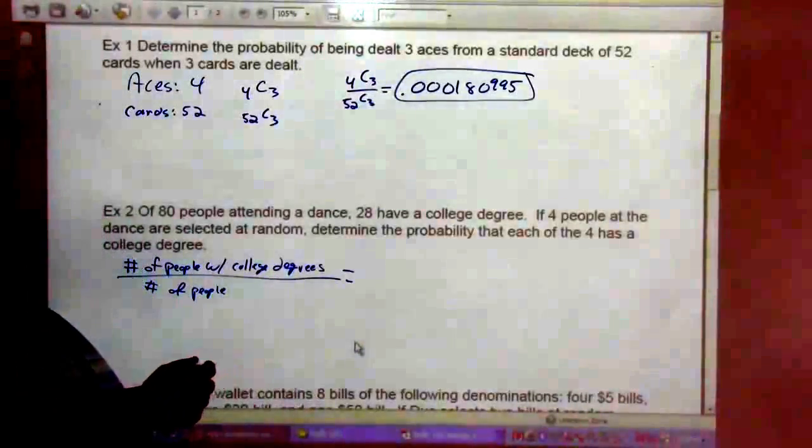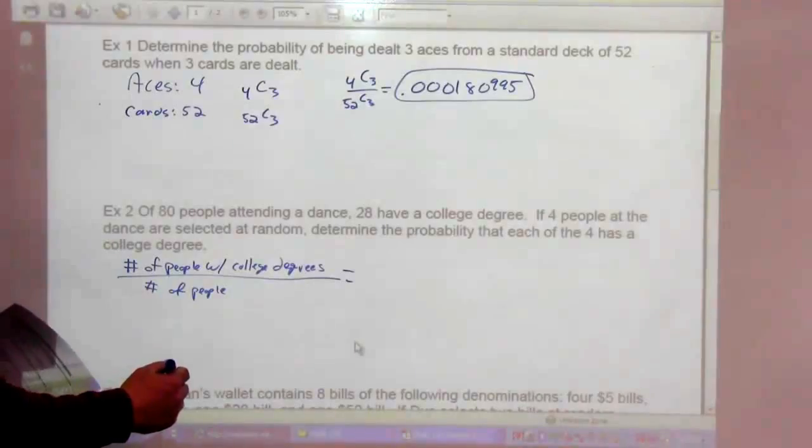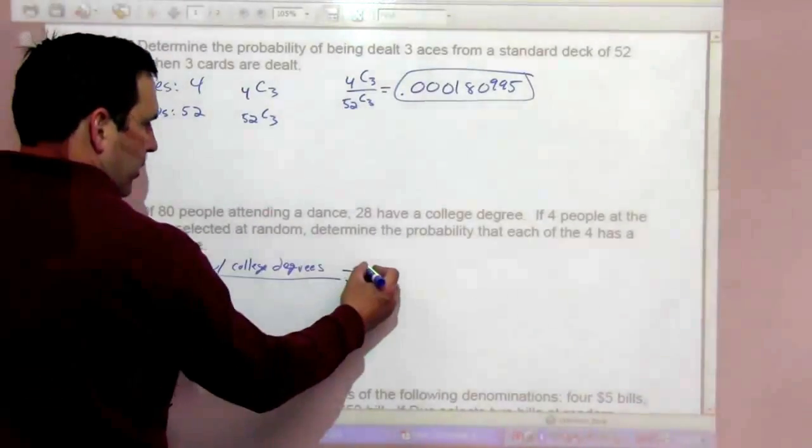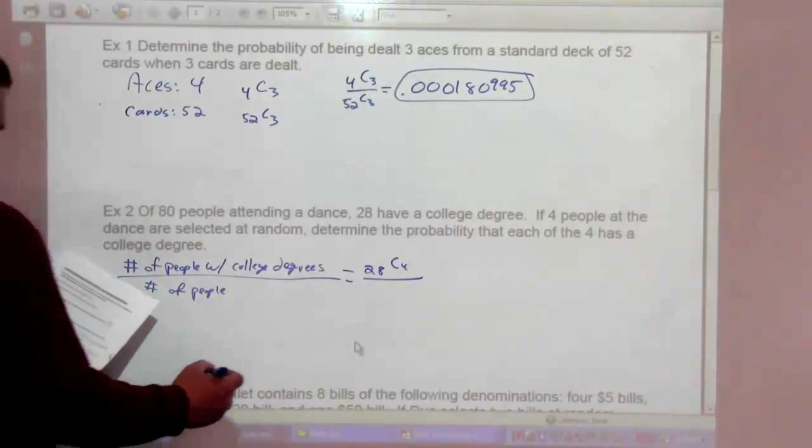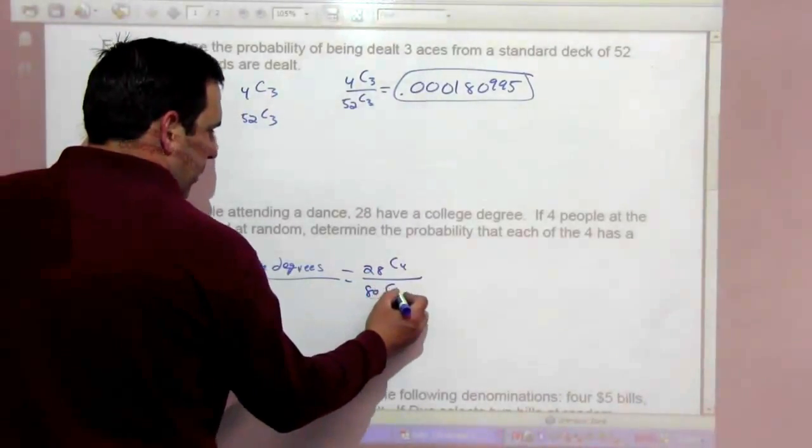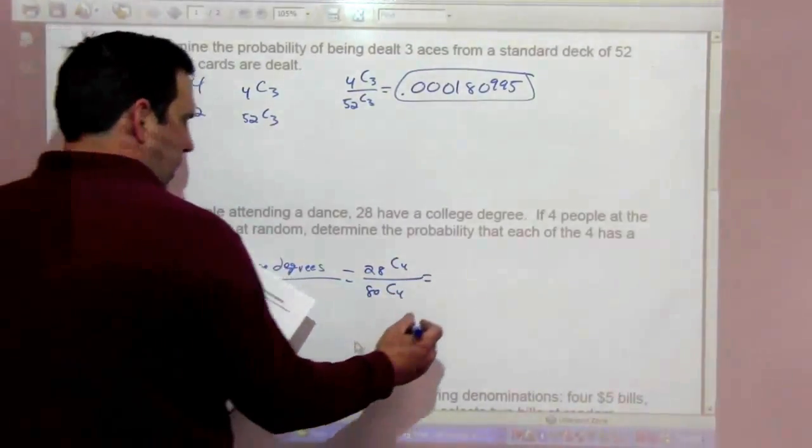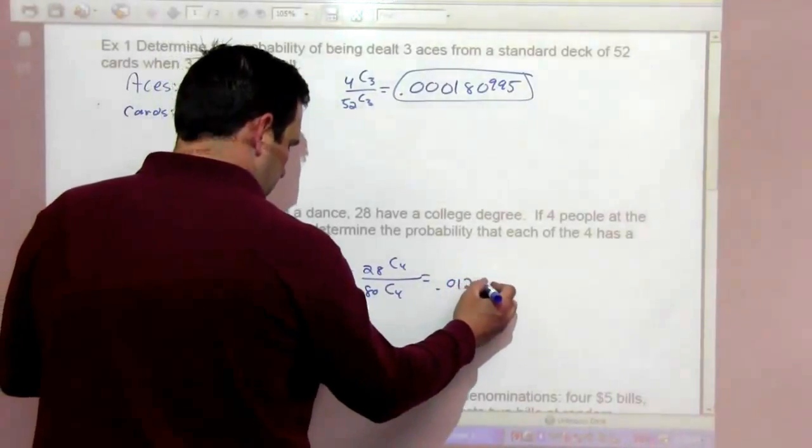So we want to know the probability that 4 of the 4 people chosen have college degrees. So 28 choose 4 over 80 people. 80 choose 4. That's going to be 0.01295.